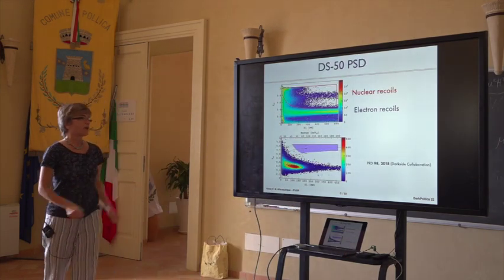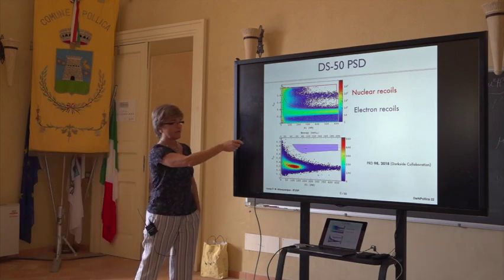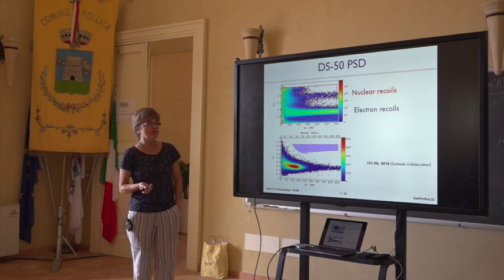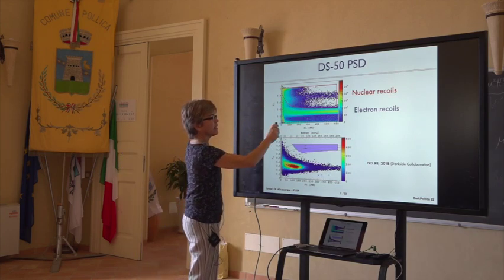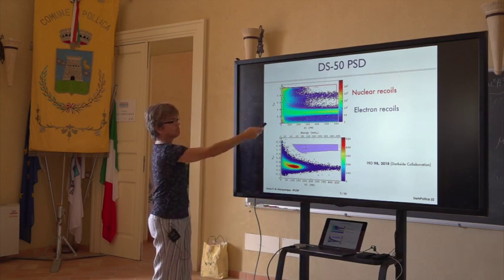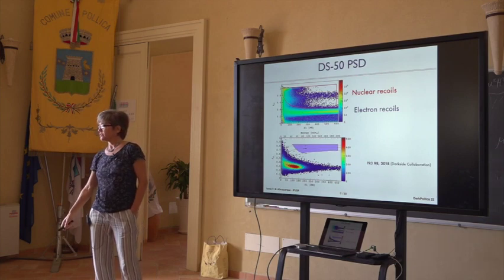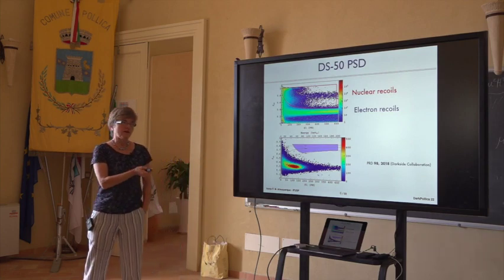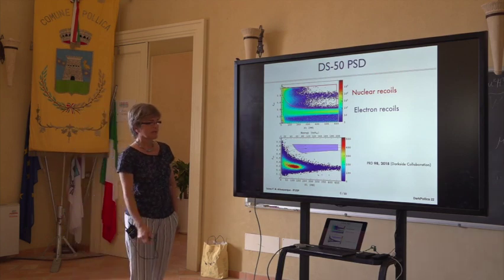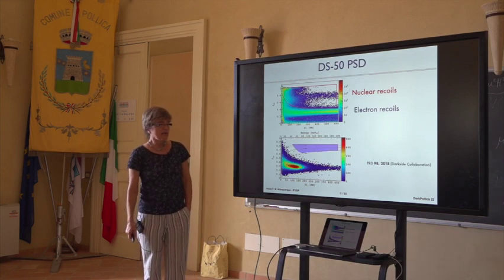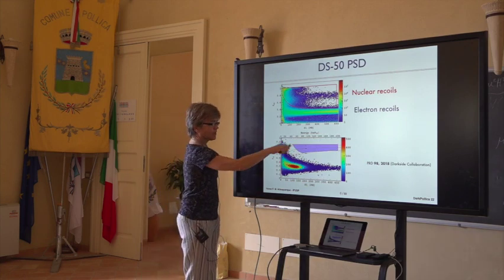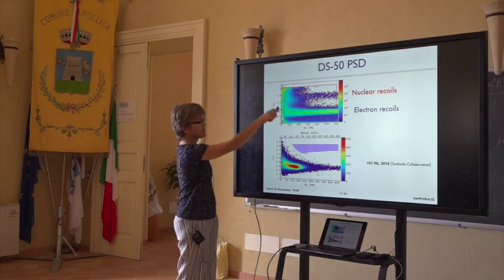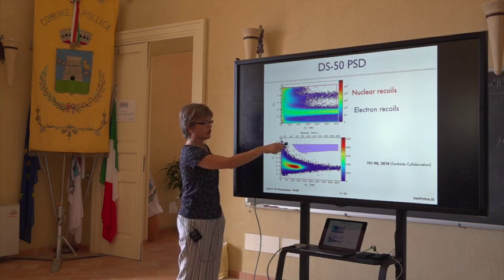Here I have a plot of the F90 parameter versus S1 signal in photoelectrons. In the first figure with basic cuts, you can see nuclear recoils at high F90 and electrons around 0.3, and you can really distinguish them well. The second plot is our final analysis of 532 days of DarkSide-50 where we looked for WIMPs. WIMPs would be expected in this region, we had a background-free experiment and found no signal, but you can see the excellent discrimination between electron and nuclear recoils.